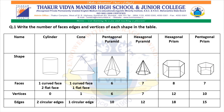Pentagonal pyramid: 6 faces, 6 vertices and 10 edges. Hexagonal pyramid: 7 faces, 7 vertices and 12 edges. Hexagonal prism: 8 faces, 12 vertices and 18 edges. Pentagonal prism: 7 faces, 10 vertices and 15 edges.